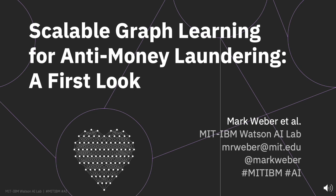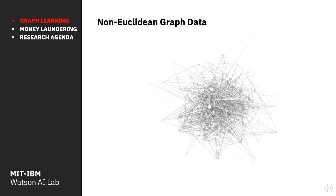Today I'm excited to share what we call a first-look paper at scalable graph convolutional networks for financial applications, including anti-money laundering (AML). We've seen deep learning do remarkable things on Euclidean data — audio, images, video — but not so much yet on graph-structured data until very recently.